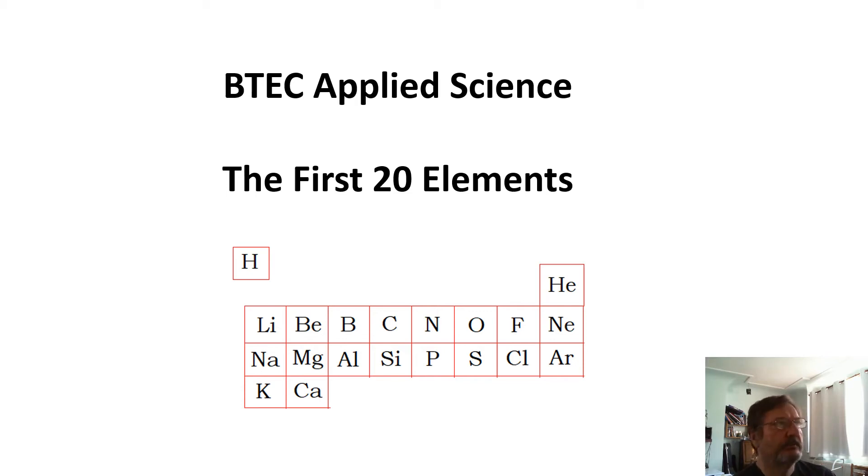BTEC Applied Science: the first 20 elements. If you're doing BTEC Applied Science, or A-level physics, or GCSE chemistry, this is really useful stuff. This is something I learned when I was 14 or 15, and it is one of the most useful things I've learned—just to be able to write down the first 20 elements.